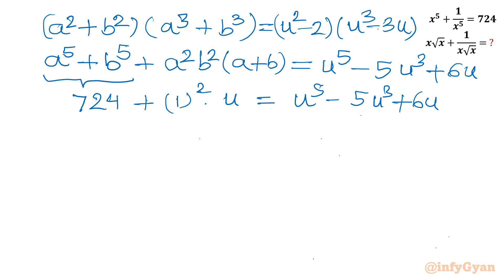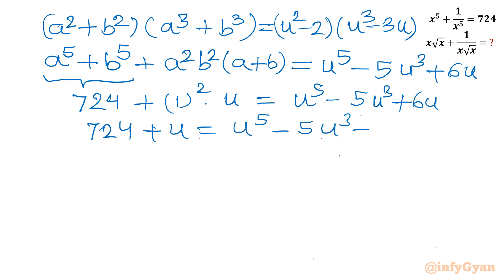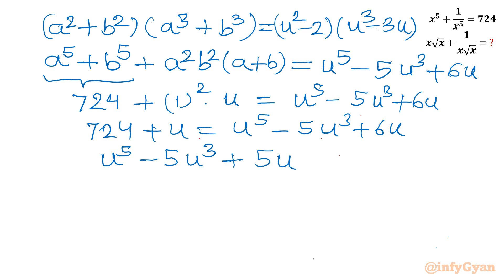Taking all terms to one side: 724 + u = u⁵ − 5u³ + 6u, giving us u⁵ − 5u³ + 5u − 724 = 0.